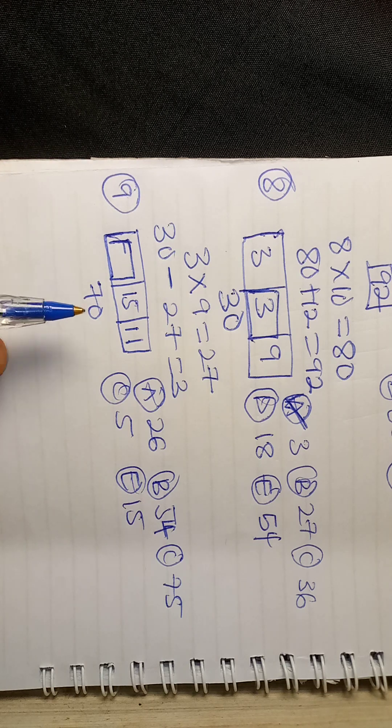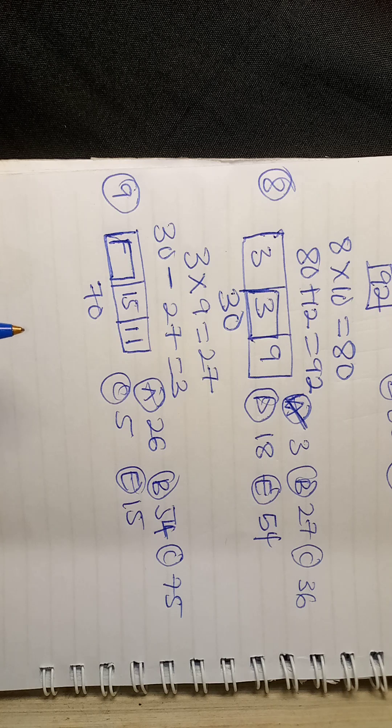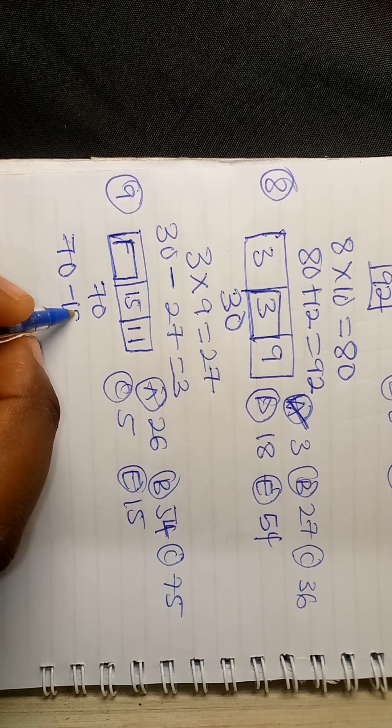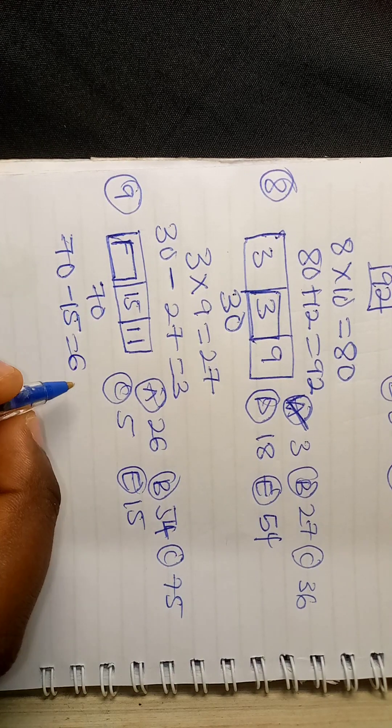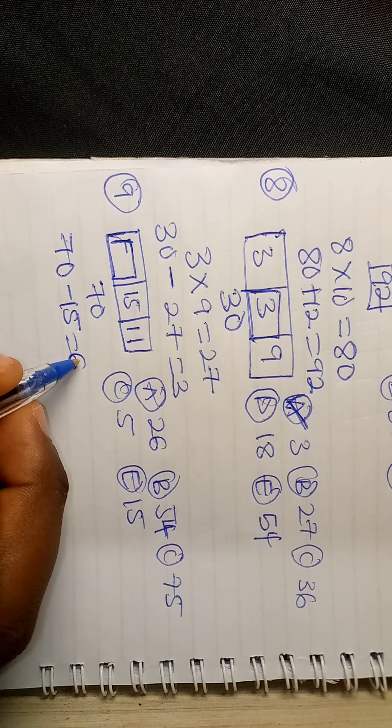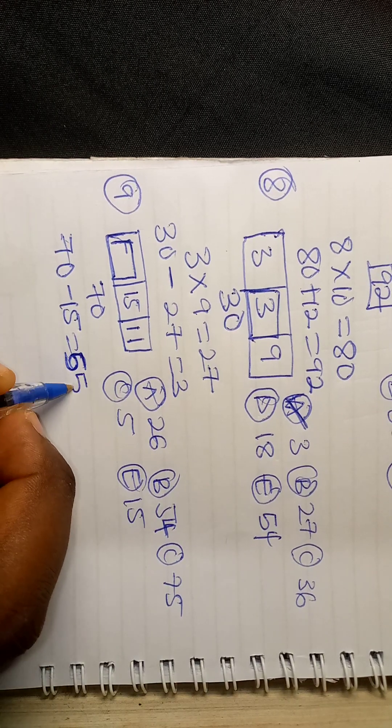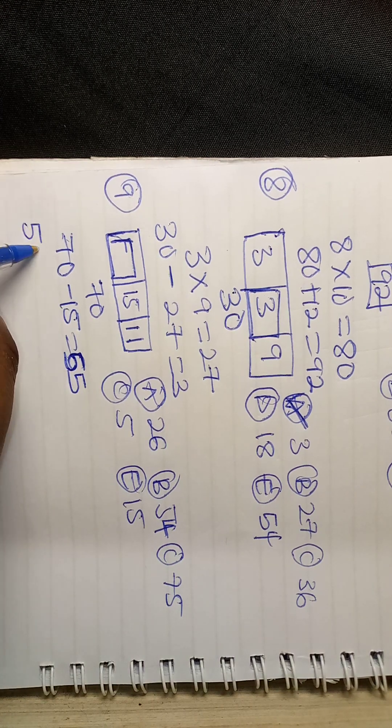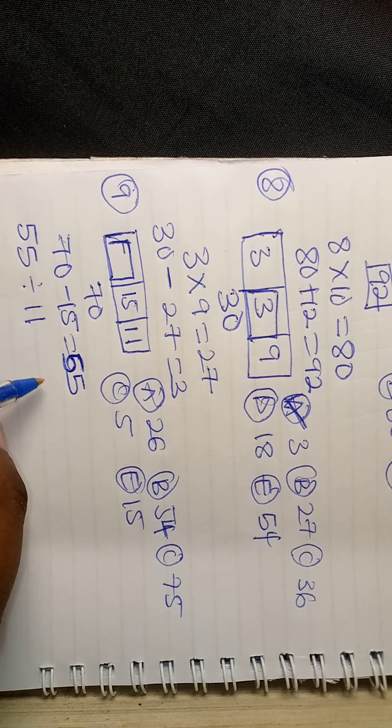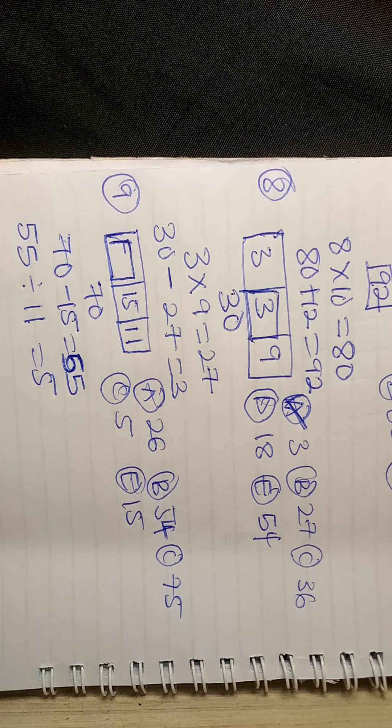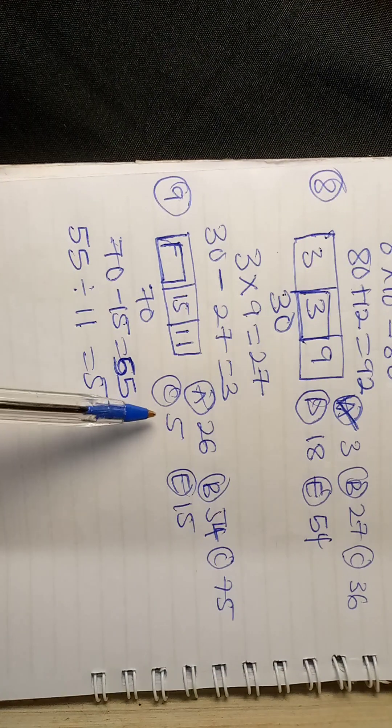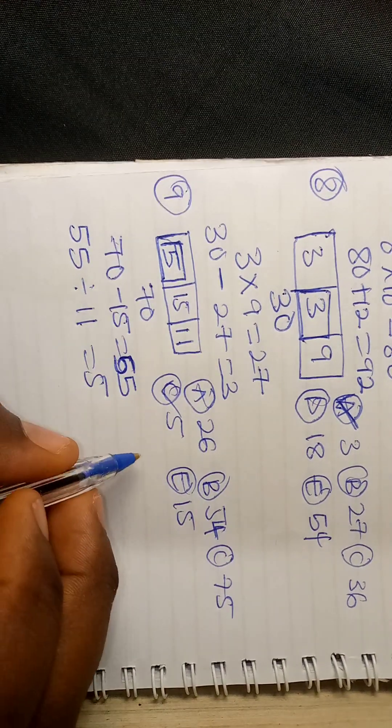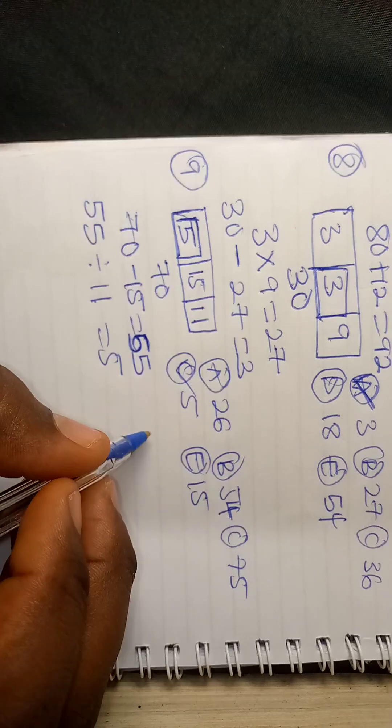The fourth SSS, that's number nine for test one. We get the answer by first of all subtracting 70 from 15. 70 minus 15, that's 55. Then we'll say 55 divided by 11, it should be 5. So that's how we get this box, so our answer is C, that's 5.